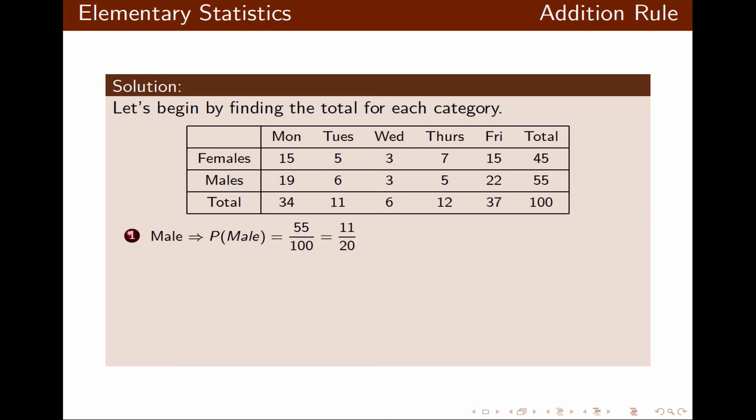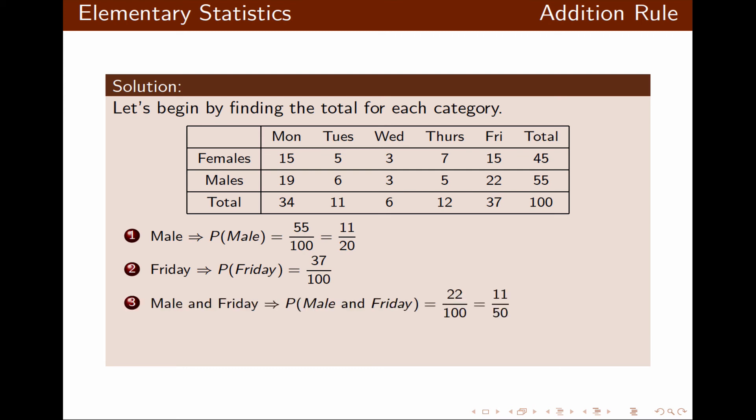Probability that the person is a male would be the total number of males, 55, divided by the total number of people in the survey, 100, which reduces to 11 over 20. Probability that this person missed work on Friday would be 37 divided by 100, so 37 over 100. Probability that this person is a male and missed work on Friday would be 22 over 100, since there are 22 people who missed work on Friday and were also male — once reduced, that is 11 over 50.